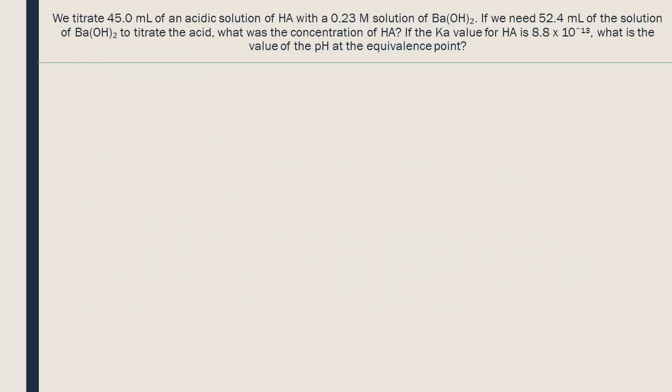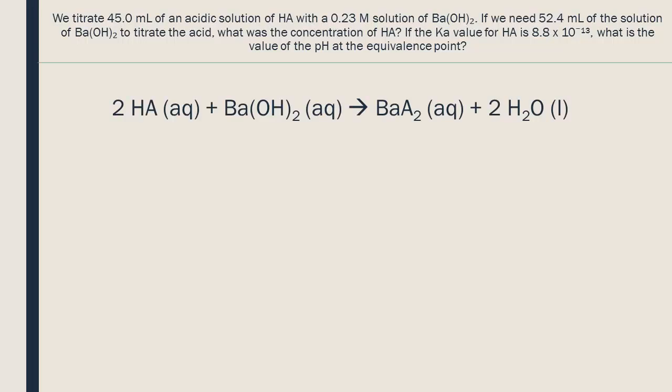First, let's write the balanced equation. In this acid-base titration, we add the same number of moles of base as there were of acid in the solution. This concept allows us to build the classic titration equation, CAVA equals CBVB. Don't forget to add the coefficient. Looking at the equation, we see that we need two moles of base to neutralize one mole of acid. Two OH⁻ ions come from each BaOH₂ to react with the H⁺ ions from HA.